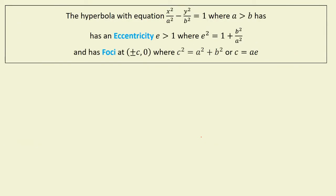In summary, the important points for the hyperbola: a has to be greater than b; eccentricity is greater than one; e squared equals 1 plus b squared over a squared; foci are at plus or minus c, 0 where c squared equals a squared plus b squared; and c equals a·e gives another way to get the eccentricity. So let's have a look at a question.